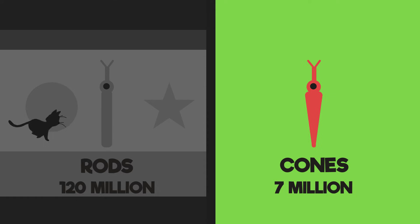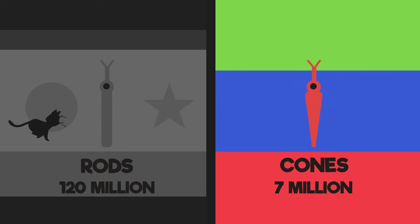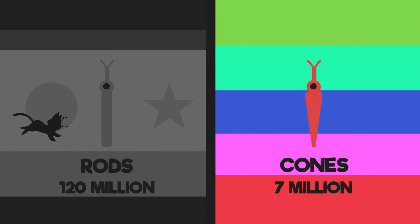Our 7 million cone cells specifically allow us to see color. Although these cells can only differentiate between red, green and blue, they all work together so we can see hundreds of different shades of color. In general, the more cones per unit area of the retina, the finer the detail that can be seen.